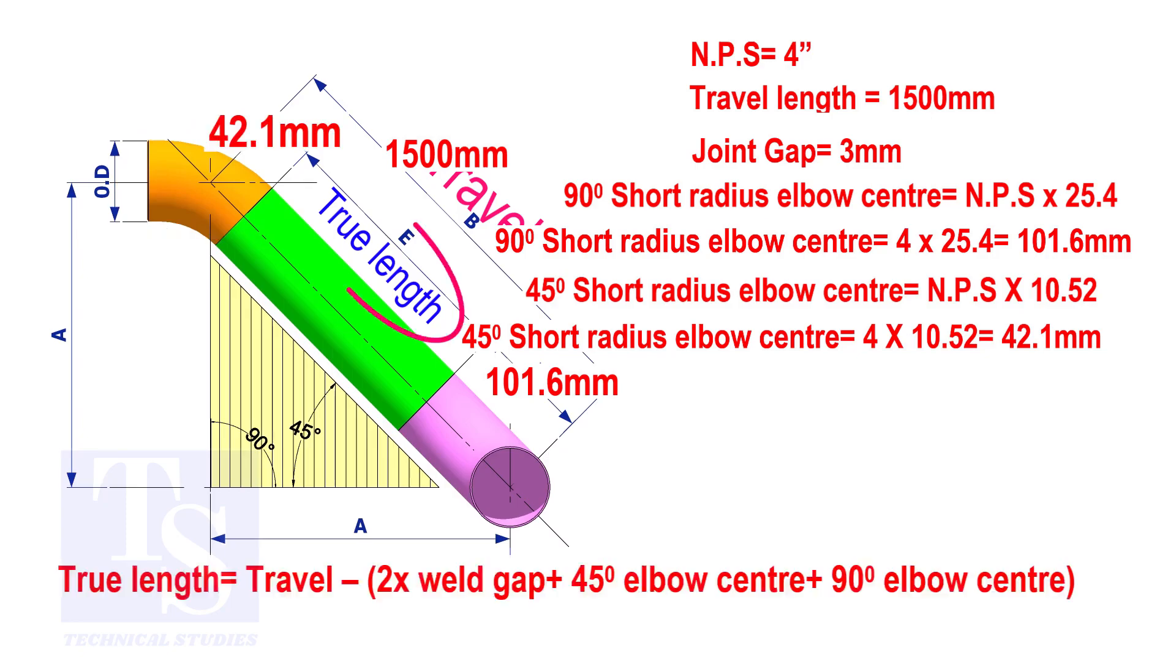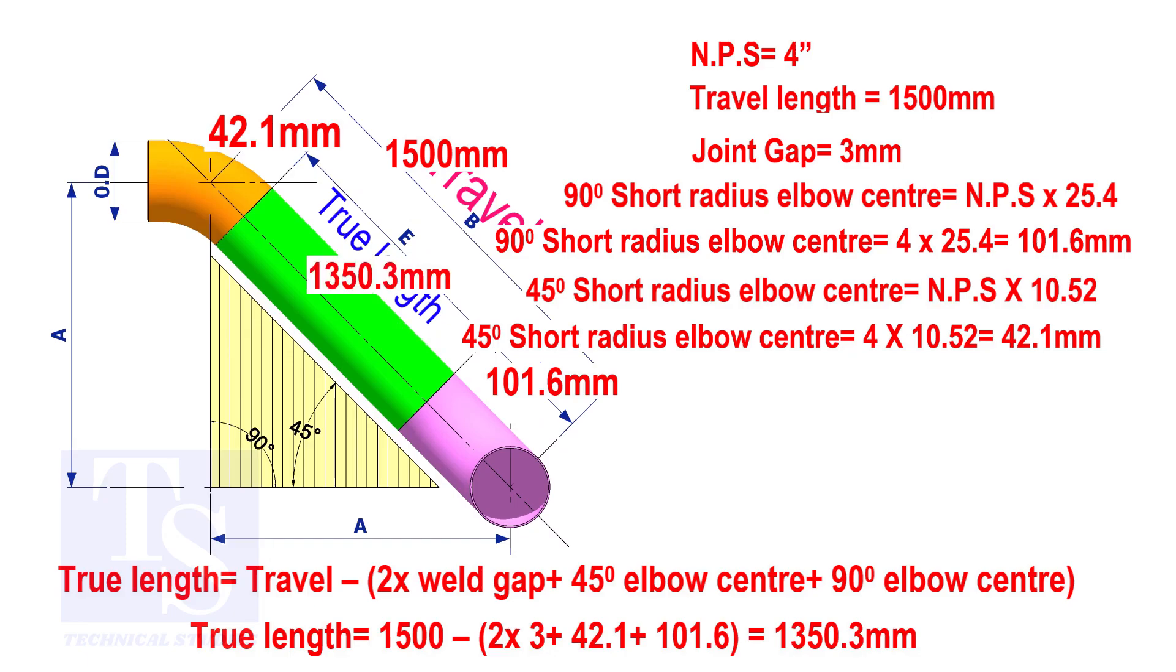To calculate the true length of the pipe, subtract two weld gaps plus both elbow centers from the travel length. The true length of the pipe is 1350.3 millimeters.